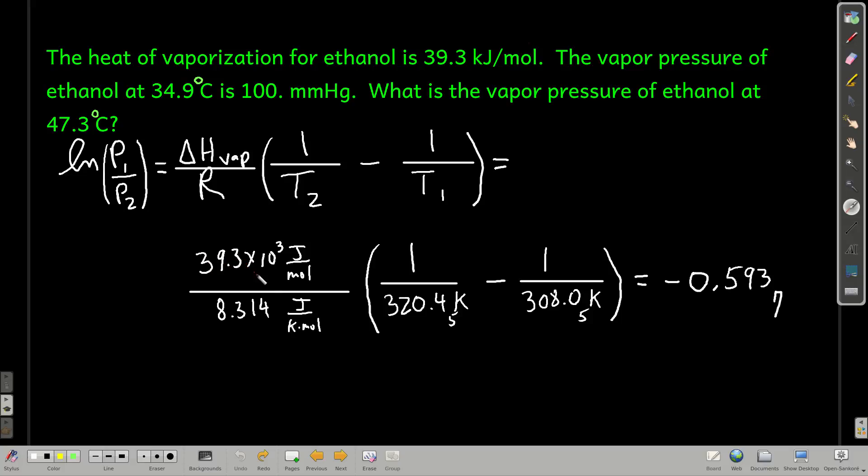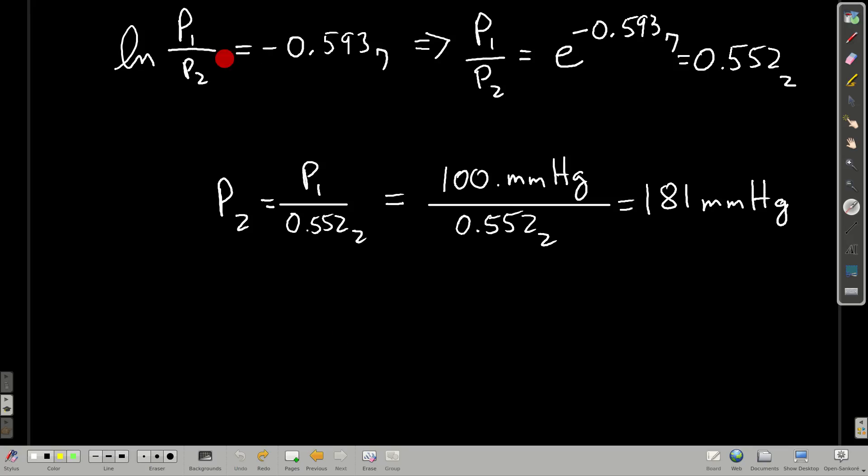So 39.3 times 10 to the third joules per mole over that. And make sure that you put the temperatures into kelvin. This is 47.3 in kelvin, 34.9 in kelvin. So plug those in and we get some number, negative 0.594. That's this whole right-hand side. That's equal to natural log of P1 over P2.